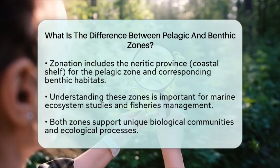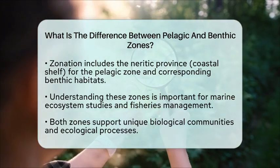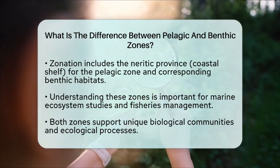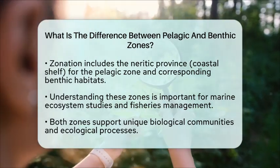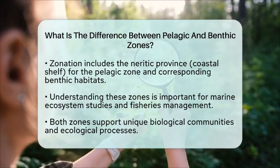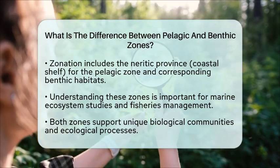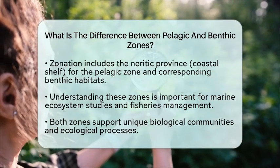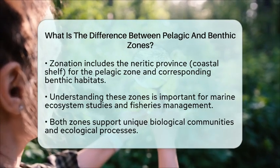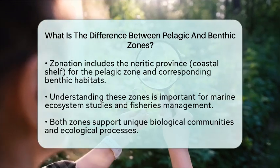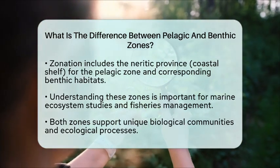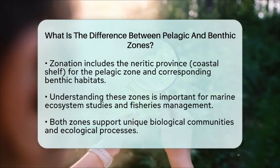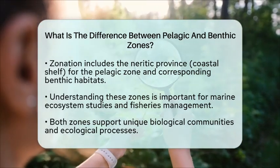In summary, the pelagic zone is the vast open water area filled with free-swimming and floating organisms, while the benthic zone is the ocean-bottom habitat where creatures live on or in the sediment. Both zones are critical components of marine ecosystems, each supporting specialized communities adapted to their specific environmental conditions.